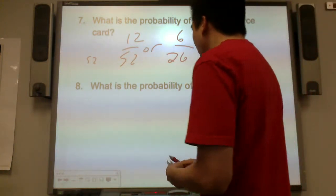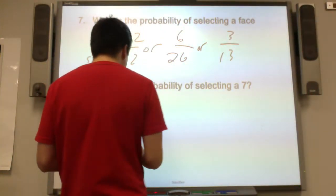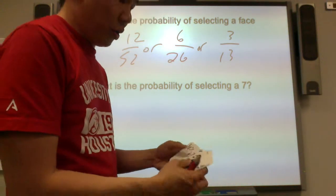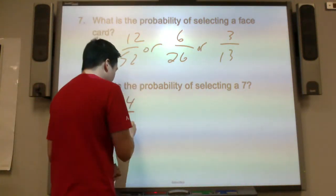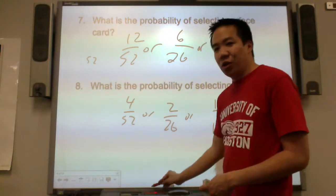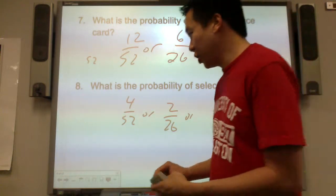What is the probability of selecting a seven? How many sevens will you find in here? One, two, three, four. Four out of 52, or two out of 26, or one out of 13. So that's the study of playing cards.